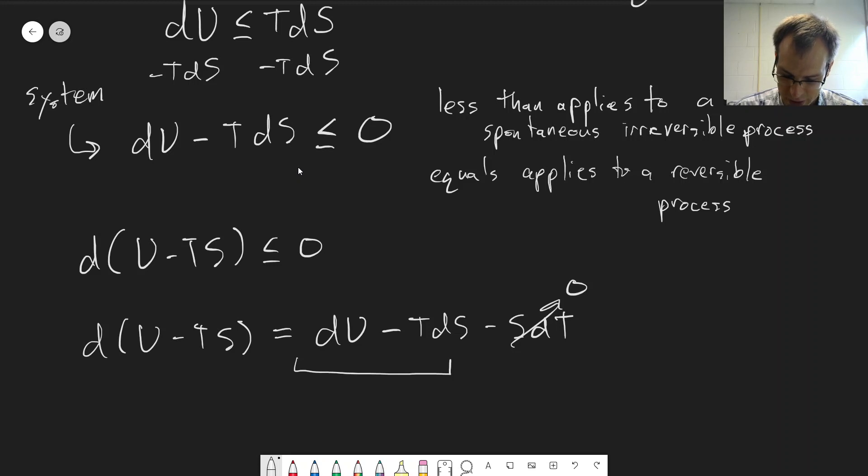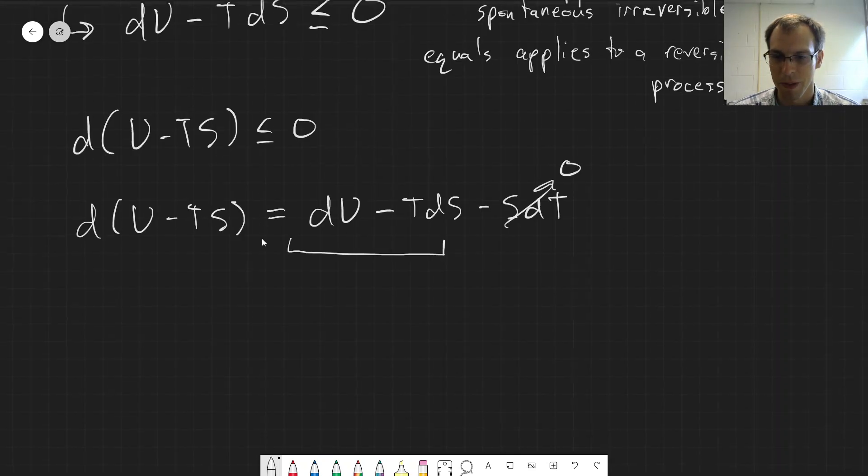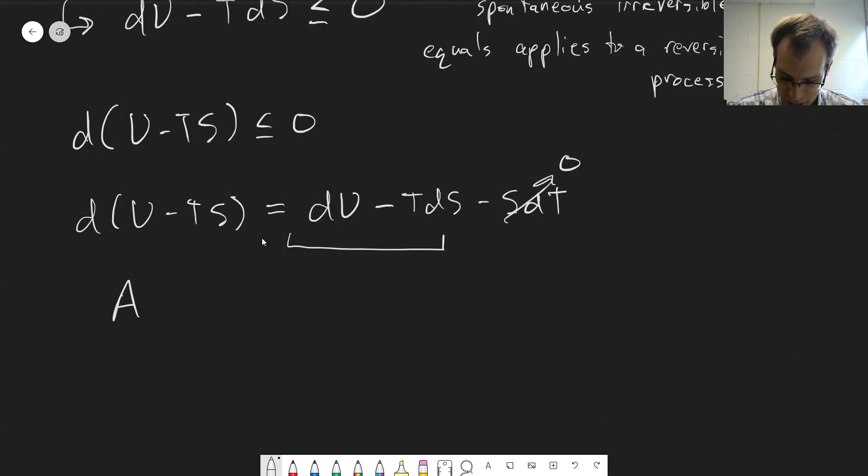So what this does is it allows us to define a new function here, which is A equals U minus TS, and this A is what we call the Helmholtz energy.